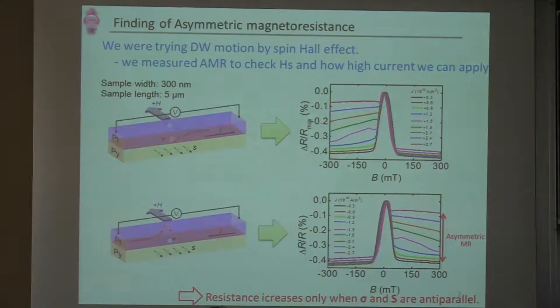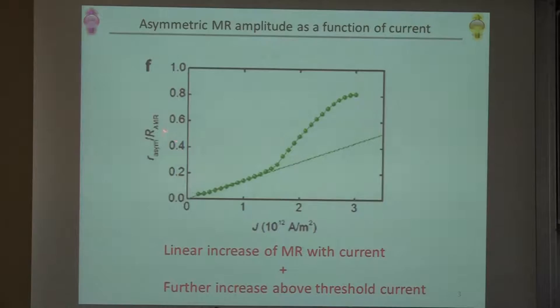Next, I plot this amplitude as a function of injected current density. This asymmetric MR shows a fast linear increase, and at some point, they show a fast increase above a special current.